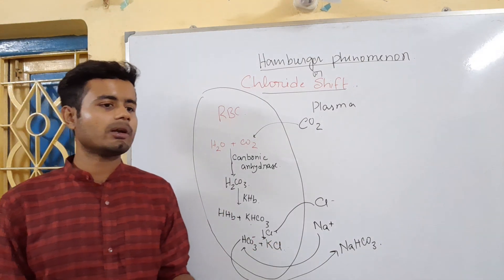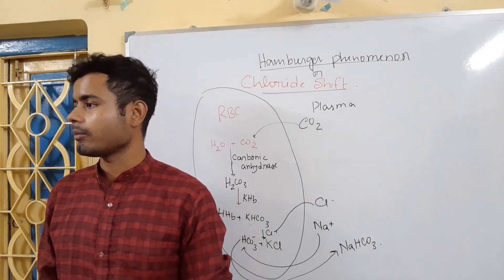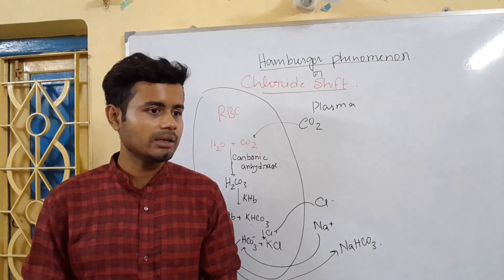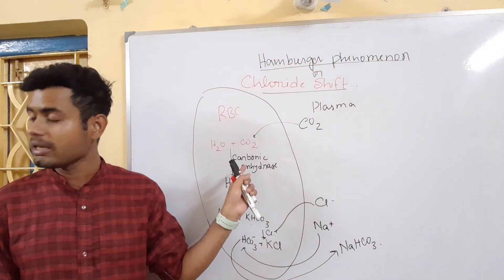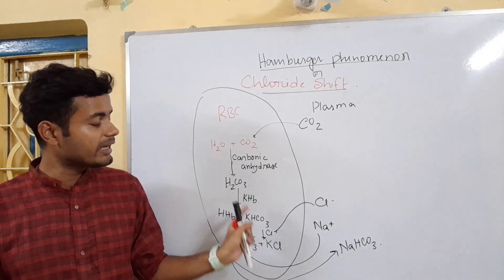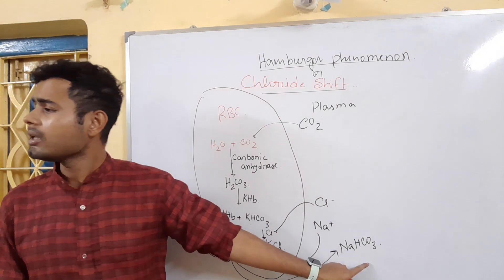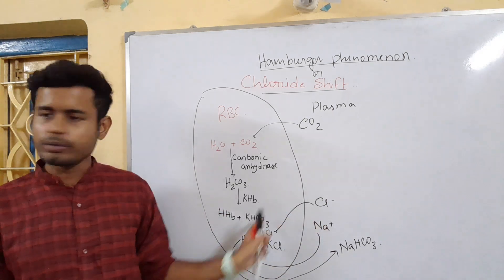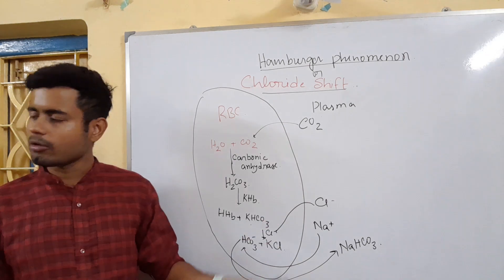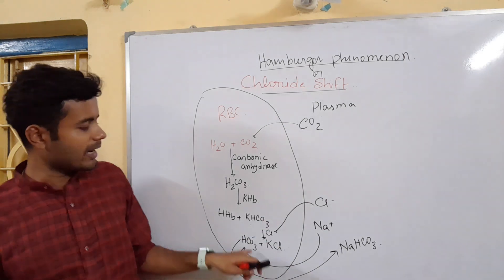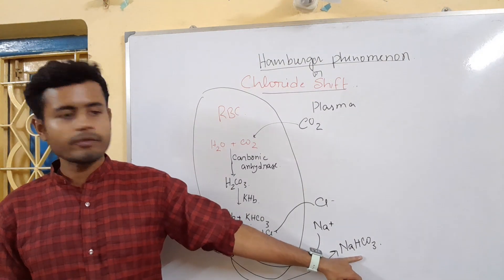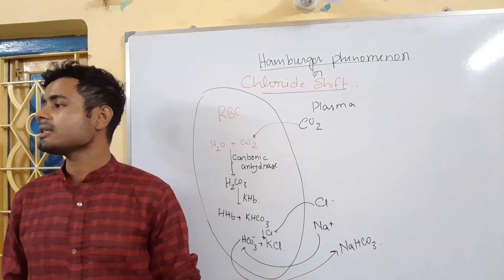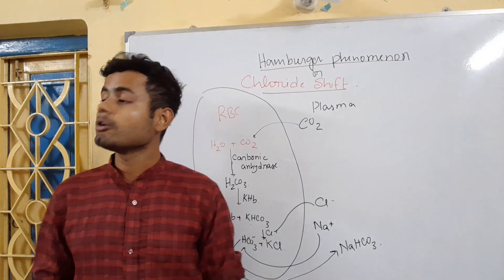This is the chloride shift, or Hamburger phenomenon. It occurs because carbonic anhydrase is predominant in RBCs — that is why CO₂ must go to the RBC to form carbonic acid and then sodium bicarbonate. There is no chlorine inside RBC, so chlorine is shifted towards RBC. There are also no sodium ions inside RBC, so bicarbonate fuses with the sodium ion present in plasma to form sodium bicarbonate. This is the chloride shift in CO₂ transport.